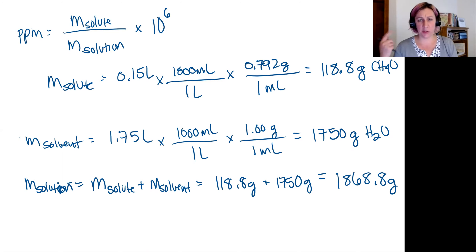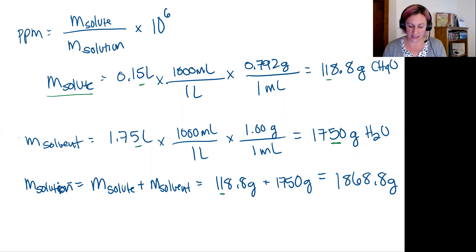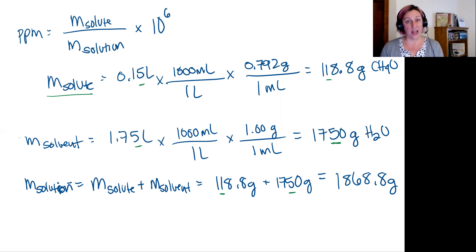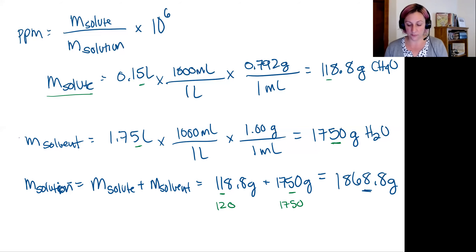Reviewing significant figures: for the mass of my solute I started with two, so I end with two. For the mass of my solvent I have three. When adding, I report to the least number of decimal places. Both values rounded by sig figs would be 120 and 1750 — both with zero decimal places — so I'll report to zero decimal places, ending on the 8 in 1869. I'll do the calculation with all digits and round at the very end.